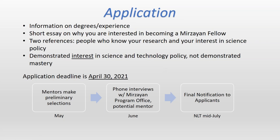The application is fairly simple and straightforward. It asks for your CV and information on the degrees and experience you've had. There's a short essay asking why you would be interested in becoming a Marzayan fellow. You'll need two references — people who know both your research and your interest in science policy. Importantly, you do not need a demonstrated mastery of science policy, just a demonstrated interest in science and technology policy.